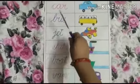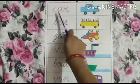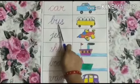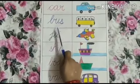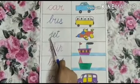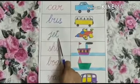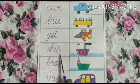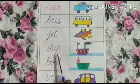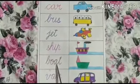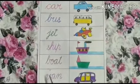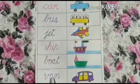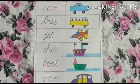Now let's revise. C-A-R, car. B-U-S, bus. J-E-T, jet. S-H-I-P, ship. B-O-A-T, boat. V-A-N, van. Very good.